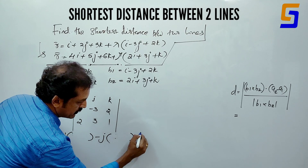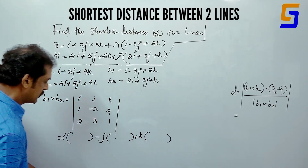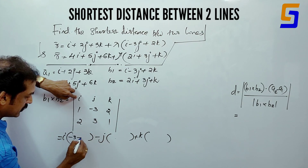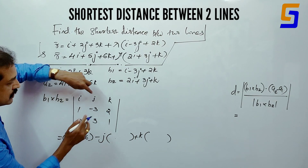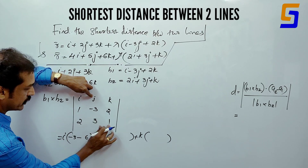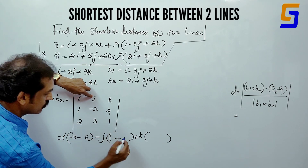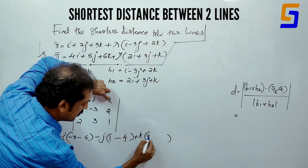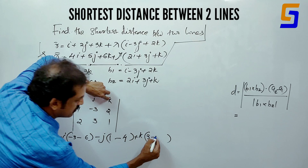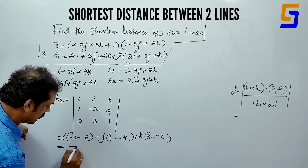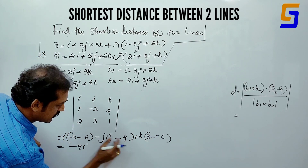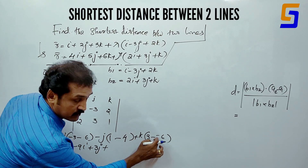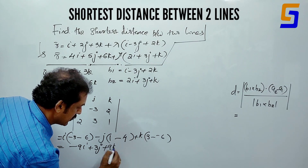B2 coefficients are 2, 3, 1. Expanding: i bracket, minus j bracket, k bracket. i into (minus 3 into 1 minus 2 into 3) gives minus 9i. j gives plus 3j. k into (1 into 3 minus minus 3 into 2) gives plus 9k. Final answer is minus 9i plus 3j plus 9k.